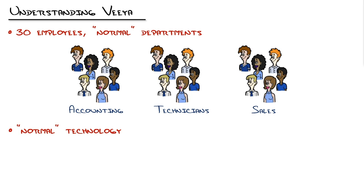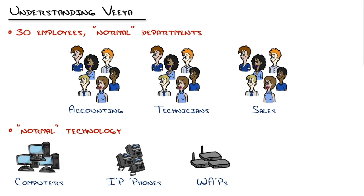Looking at our technology, we have normal technology: computers — both desktops and laptops — IP phones, wireless access points, and servers. We also have cool stuff like video surveillance and a beam robot. If you Google beam technologies, it's a little video conferencing screen attached to a small robot that you can drive around, so remote employees can beam into the office wirelessly. These are all things you should be thinking about — just look around when you walk into an organization and ask what kind of technology they have.